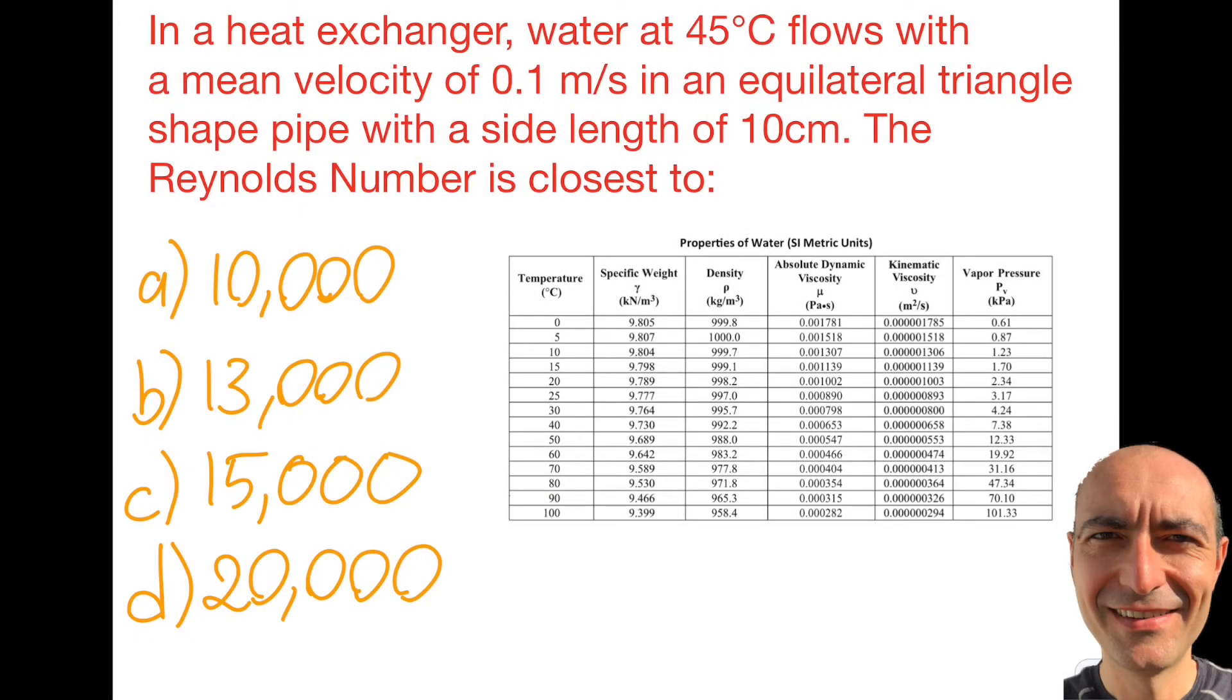Let's solve another question from non-circular ducts. This question may look familiar because we saw the case for circular at the beginning of this section of the FE review. In this one, I'm actually changing the temperature. I gave you the mean velocity of 0.1 meter per second, and this time it says equilateral triangle shaped pipe with each side length of 10 centimeters. What is the Reynolds number closest to?